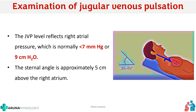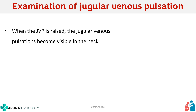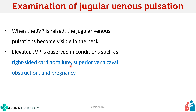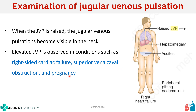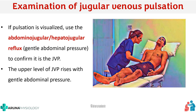The normal right atrial pressure is around 9 centimeters of water or less than 7 millimeters of mercury, and the sternal angle is approximately 5 centimeters above the right atrium. When JVP is raised, jugular venous pulsations become visible in the neck; this is usually seen in right-sided cardiac failure, superior vena caval obstruction, and pregnancy. To confirm elevated JVP, apply gentle abdominal pressure — if the JVP rises, this confirms elevation. This is called the abdominal jugular or hepatojugular reflex.